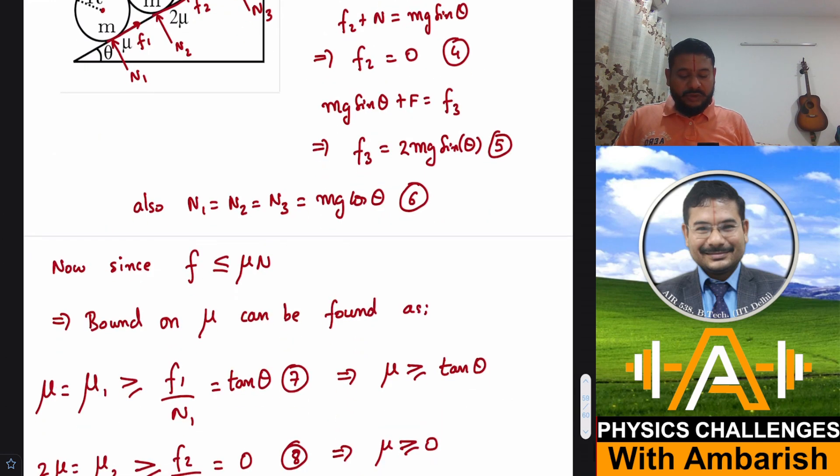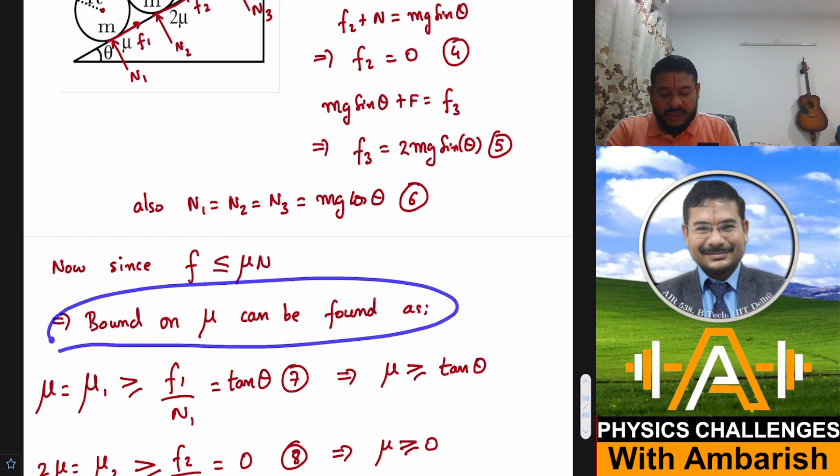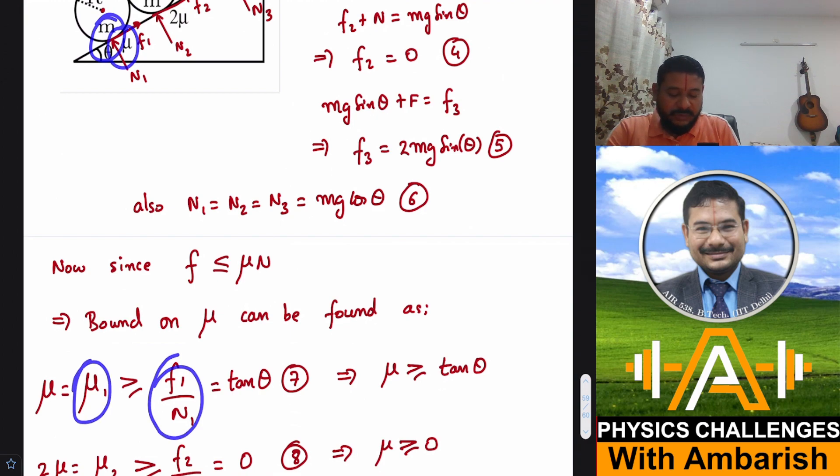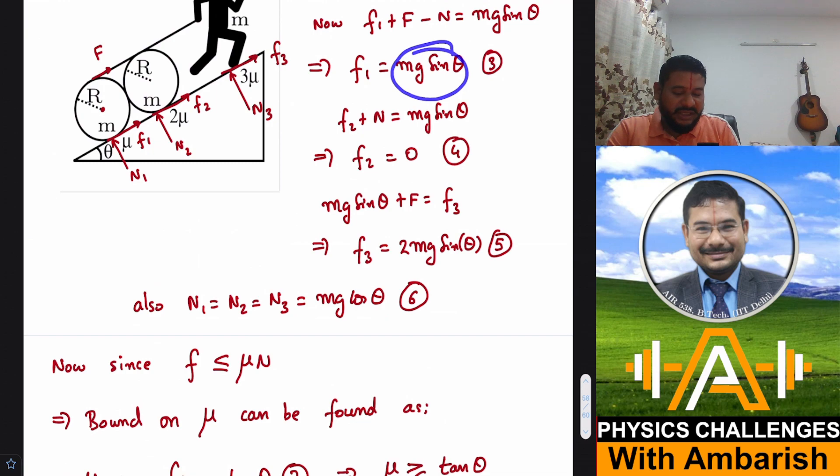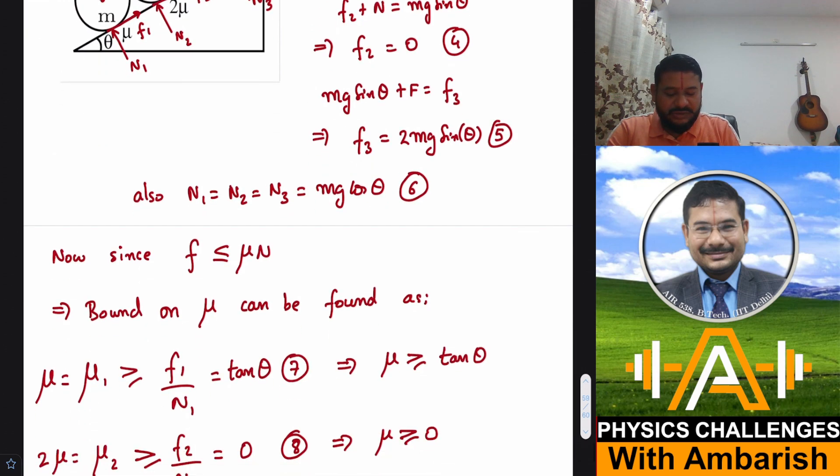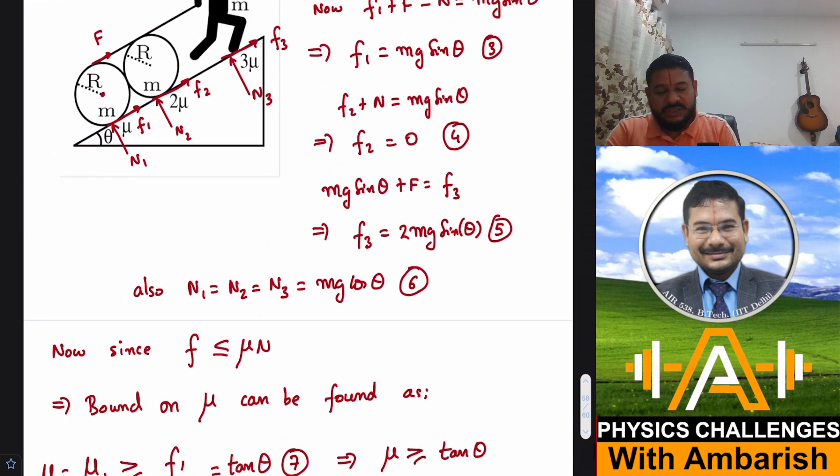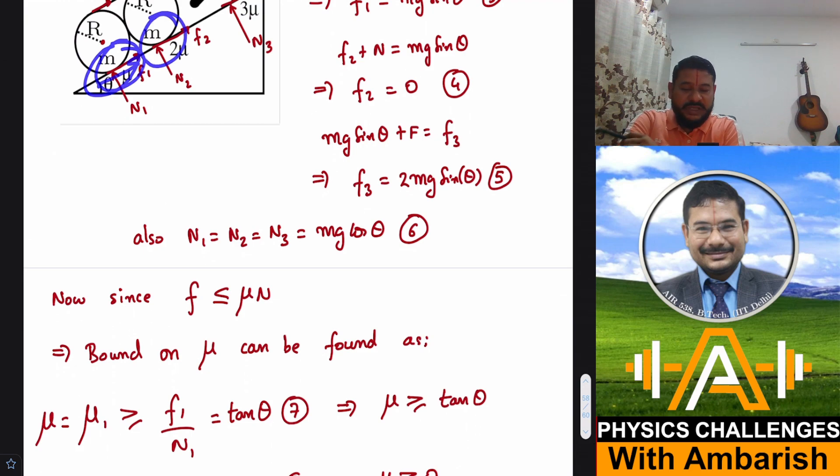Frictional force must be less than or equal to μ times normal reaction. So μ1 is given as μ. This μ should be greater than F1 by N1. F1 is mg sin θ and N is mg cos θ, so μ1 should be greater than tan θ. The coefficient of friction must be greater than tan θ.